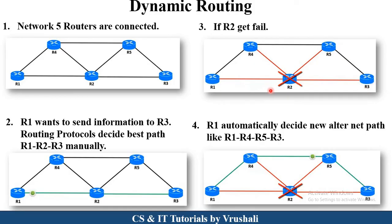Static routing depends on the network administrator, whereas in dynamic routing advanced and learned protocols are used. They find out the alternate path quickly — R1 to R4, R4 to R5, and R5 to R3 — and then send the information. This is the concept of dynamic routing.